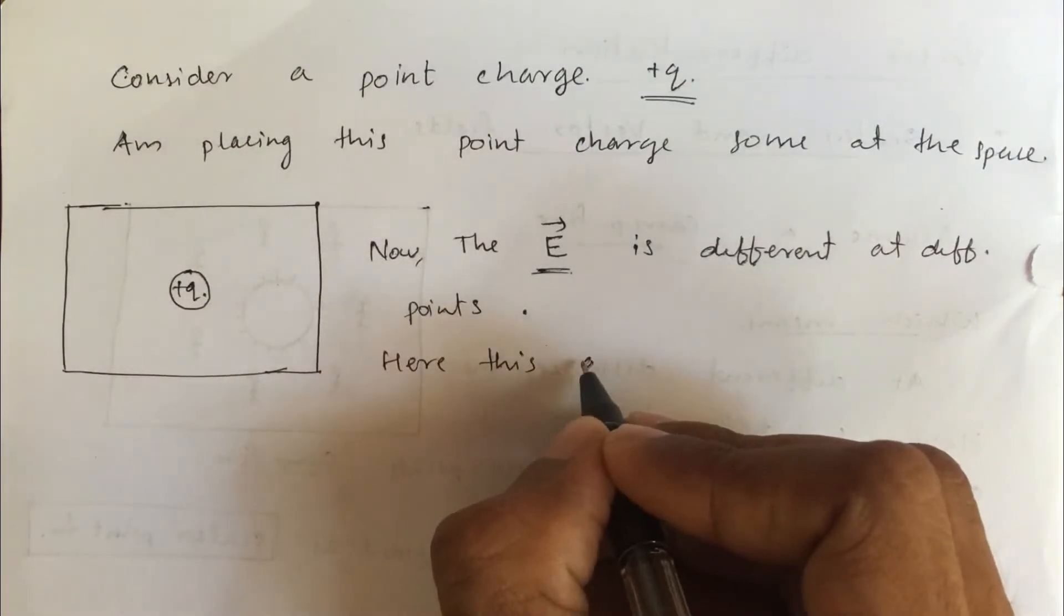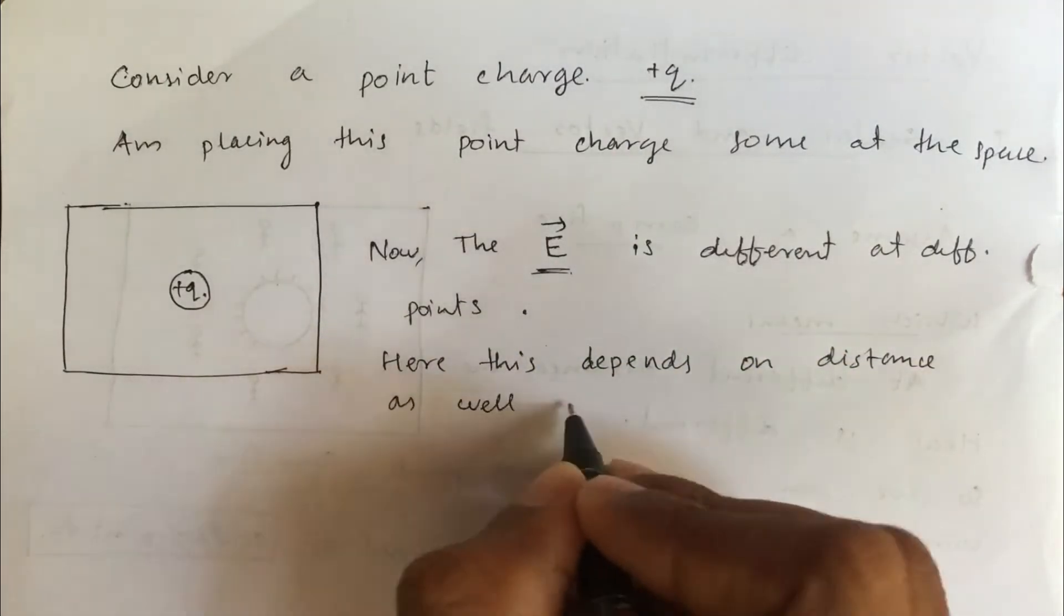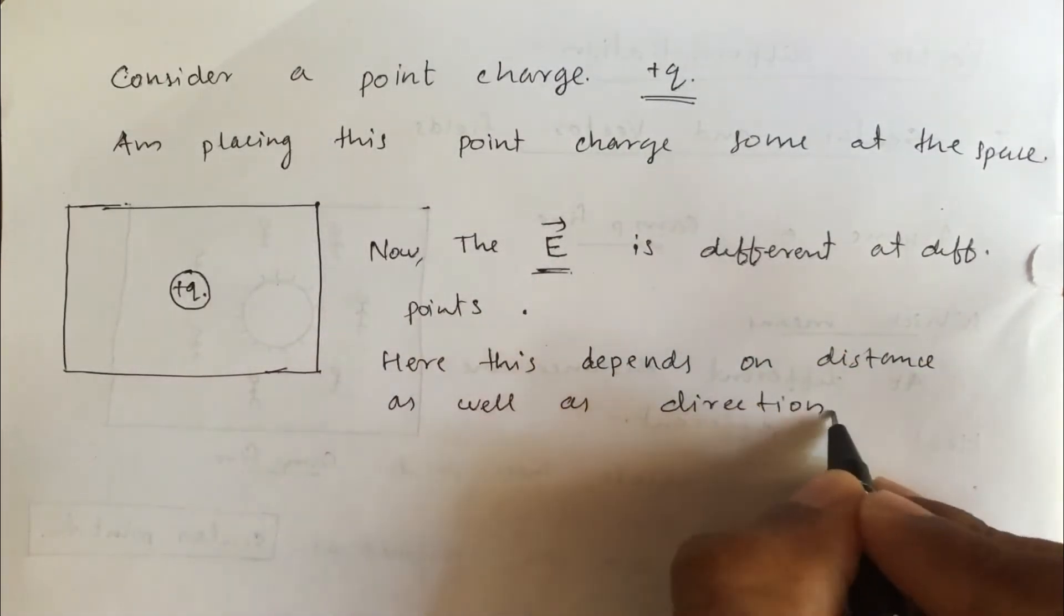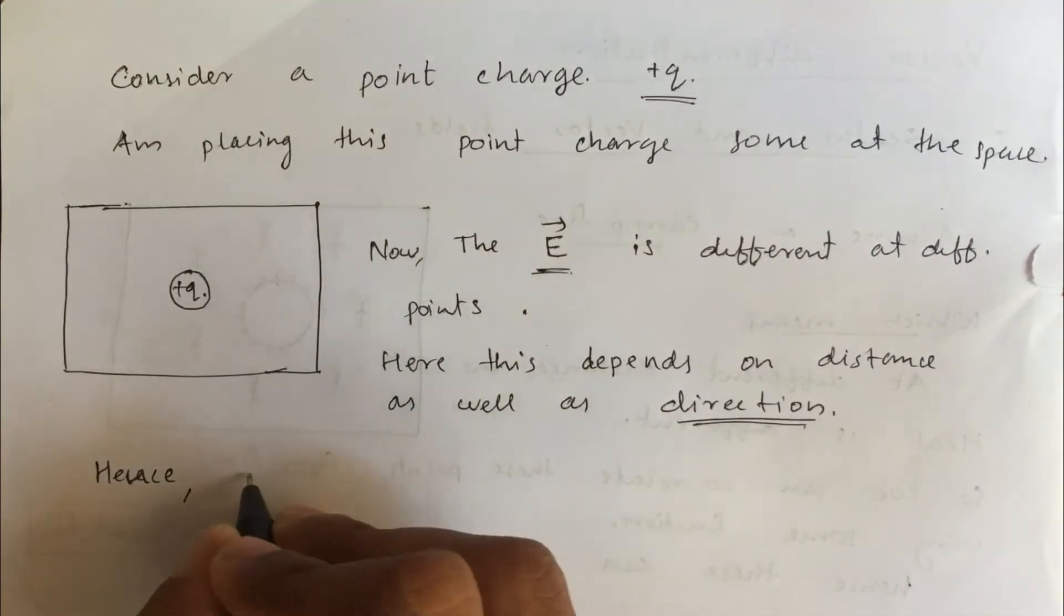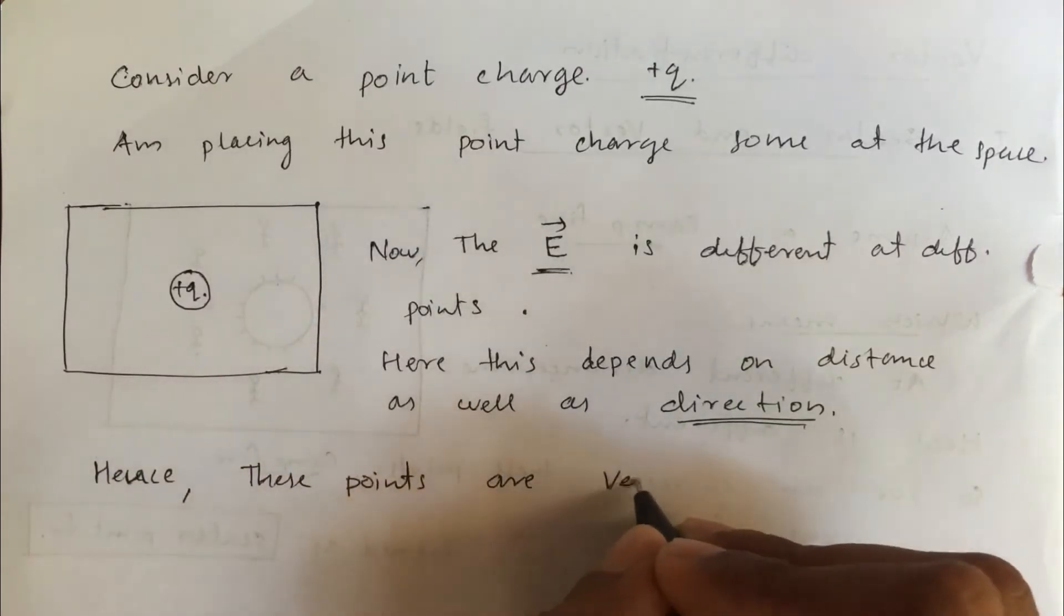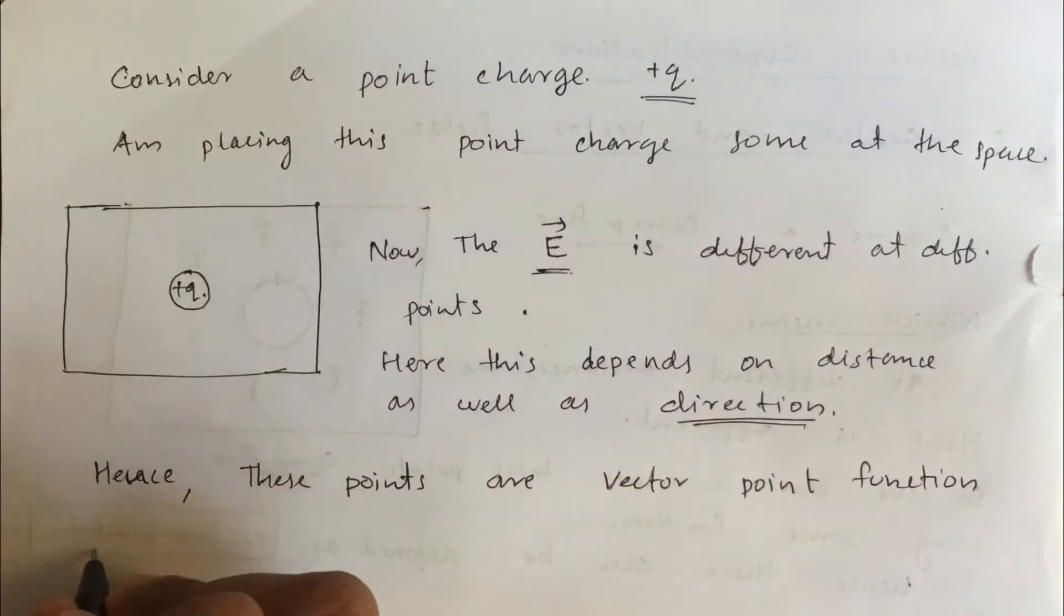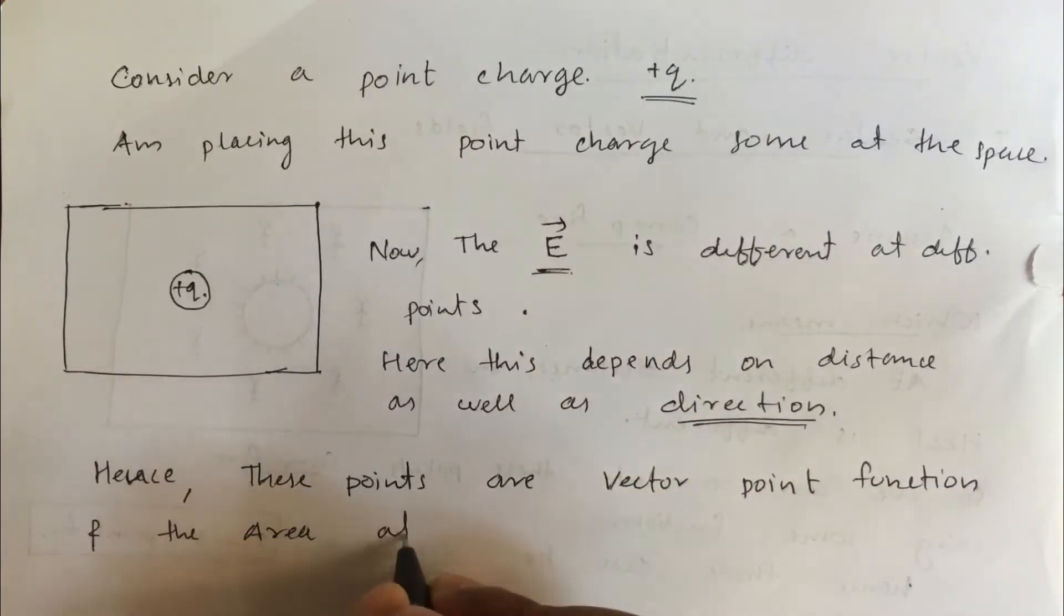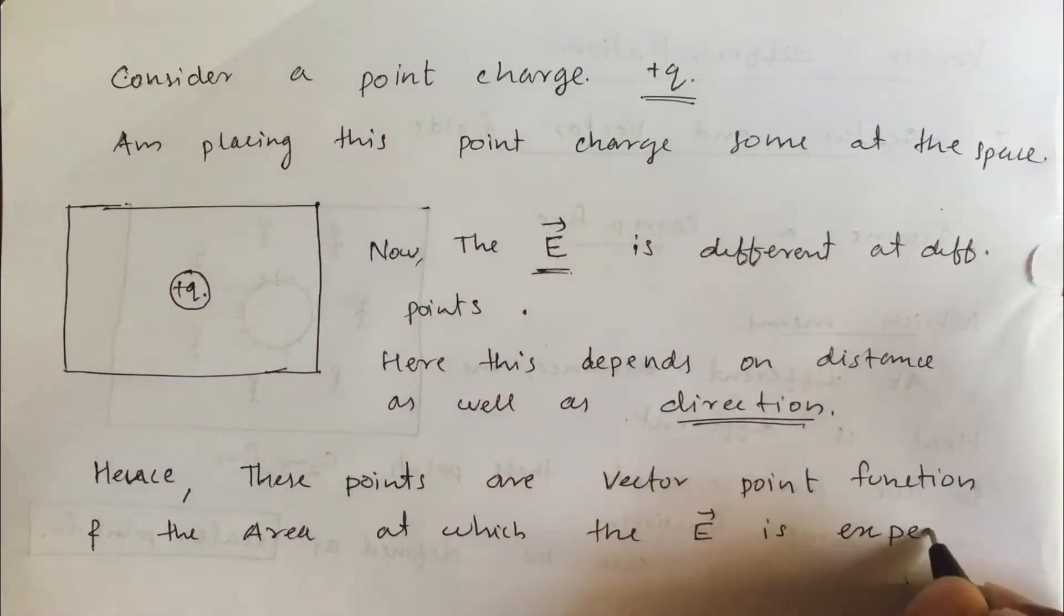Here, the electric field depends on both the distance and direction. Hence, these points are defined as vector point function, and the area at which the electric field is experienced is defined as a vector field.